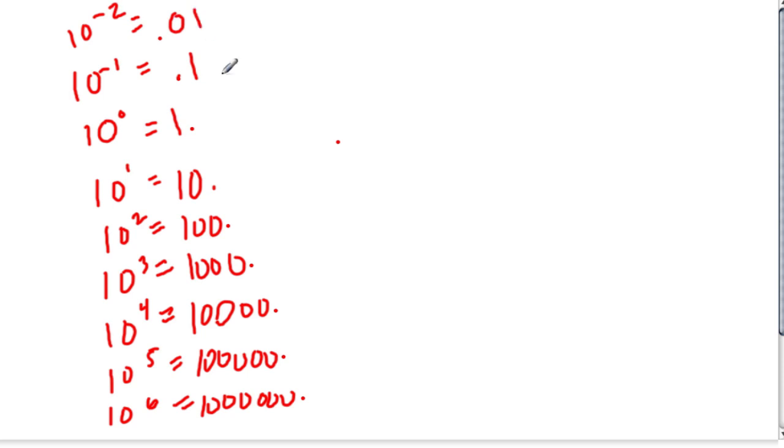It basically means divide 1 by 10 twice. 10 to the negative 3 is 0.001. 10 to the negative 4th is 0.0001.